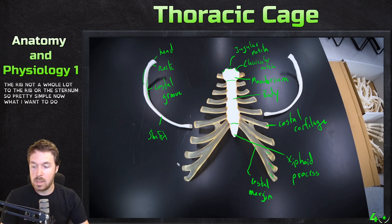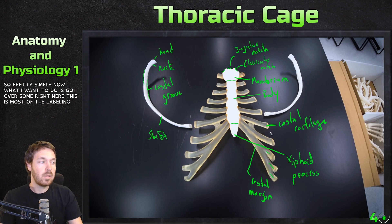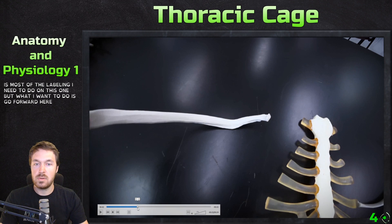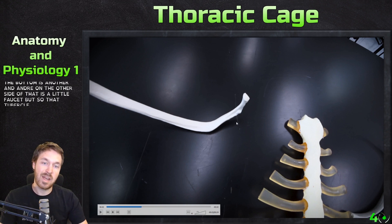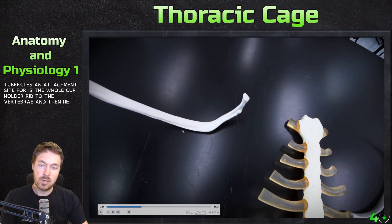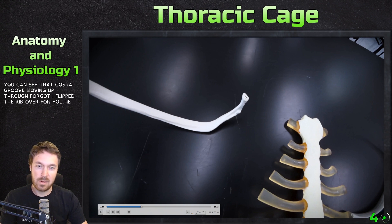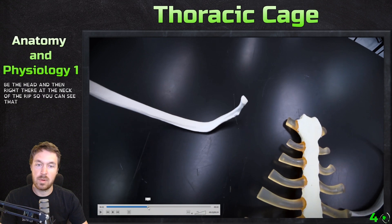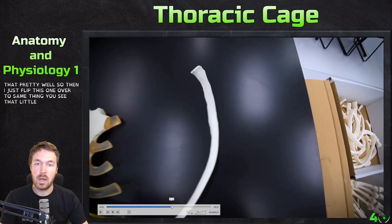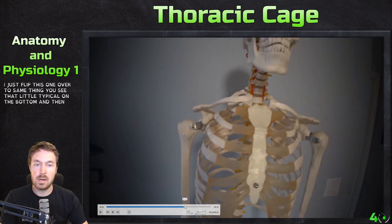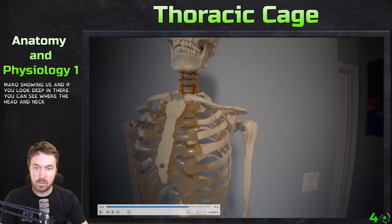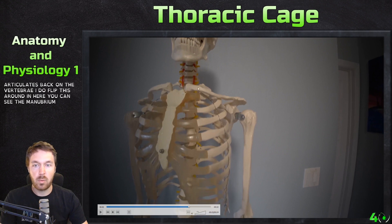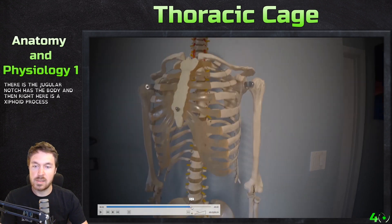Now moving to the actual skeleton. You can see the tubercle — that little bump — and right on the other side is a small facet. The tubercle is an attachment site for ligaments that help hold the rib to the vertebrae. Here you can see the costal groove running along, the head, and the neck of the rib. Flipping to the front of the skeleton, you can see where the head and neck of the rib articulate back on the vertebrae. On the sternum, here's the manubrium where the clavicle attaches at the clavicular notch, the jugular notch, the body, and the xiphoid process.